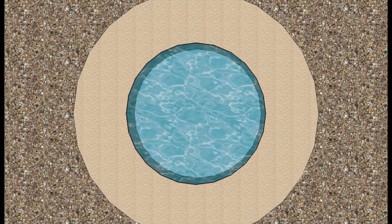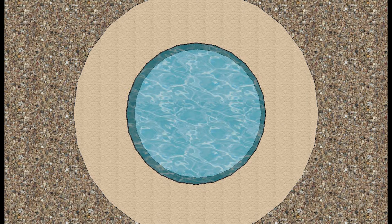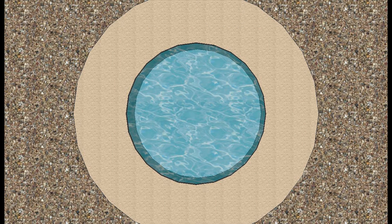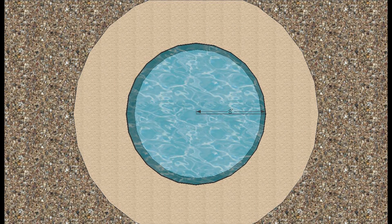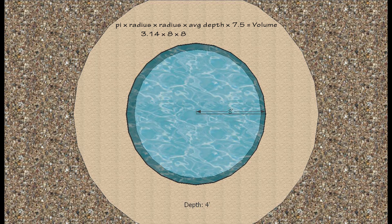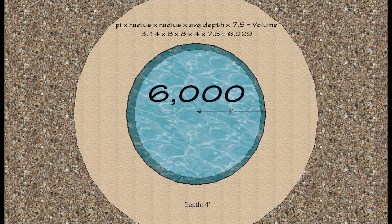Now let's look at a round pool. The formula for round pools is to multiply pi, or 3.14, times the radius squared, times the average depth of the pool, and then by 7.5. So in this example, if we have a pool 16 feet across with a depth of 4 feet, we take pi (3.14), multiply that by 8 squared or 64, then by 4 and by 7.5, and we get 6,029. Again, we'll round this and say that we have a 6,000 gallon pool.